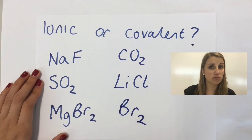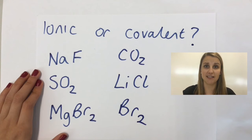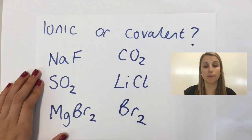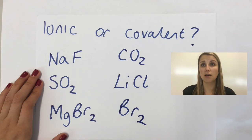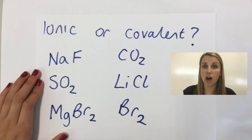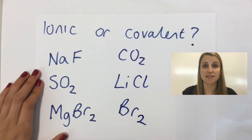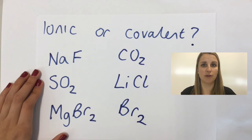MgBr₂ is an ionic bond, with magnesium being a metal and bromine being a non-metal. CO₂ is a covalent bond — carbon and oxygen are both non-metals. LiCl is an ionic bond, with lithium being a metal and chlorine being a non-metal.